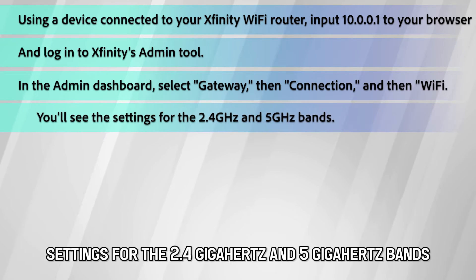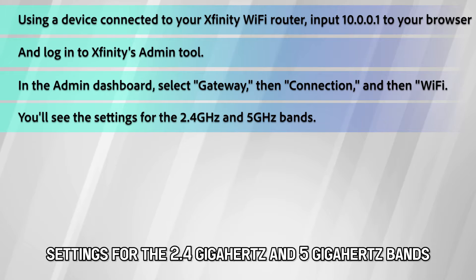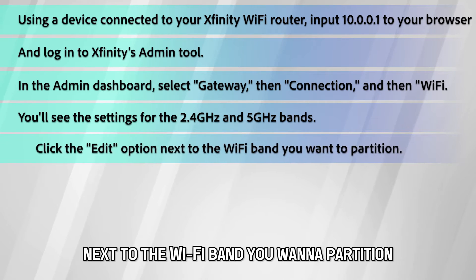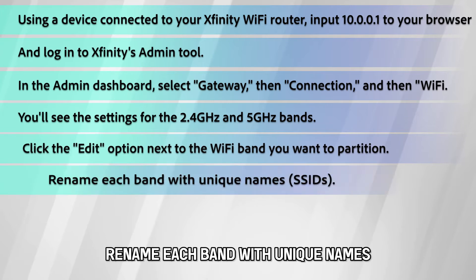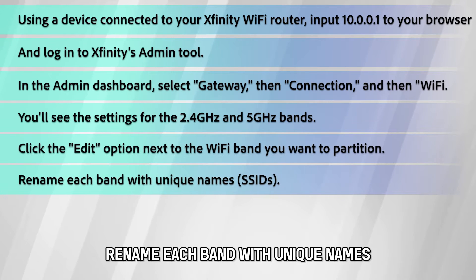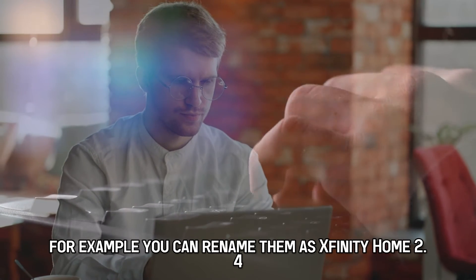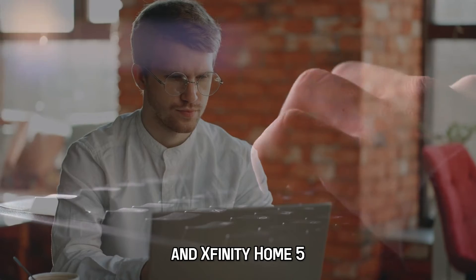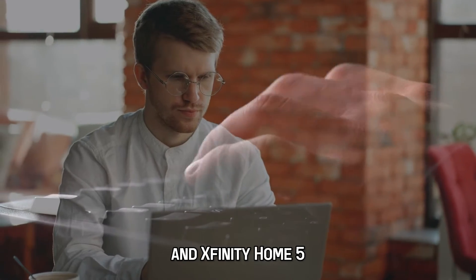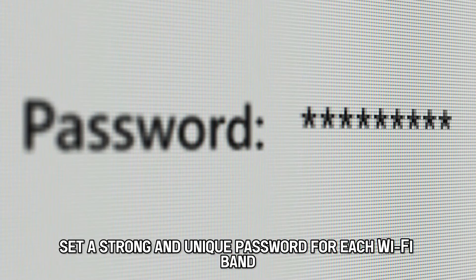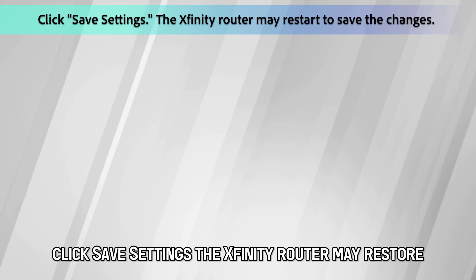You'll see the settings for the 2.4 GHz and 5 GHz bands. Click the Edit option next to the Wi-Fi band you want to partition. Rename each band with unique names — for example, you can rename them as Xfinity Home 2.4 and Xfinity Home 5. Set a strong and unique password for each Wi-Fi band, then click Save Settings.